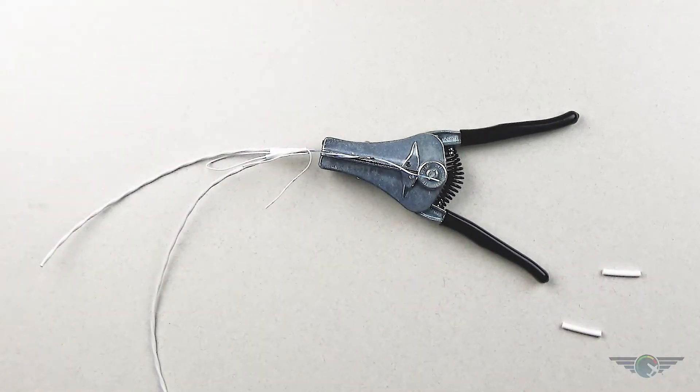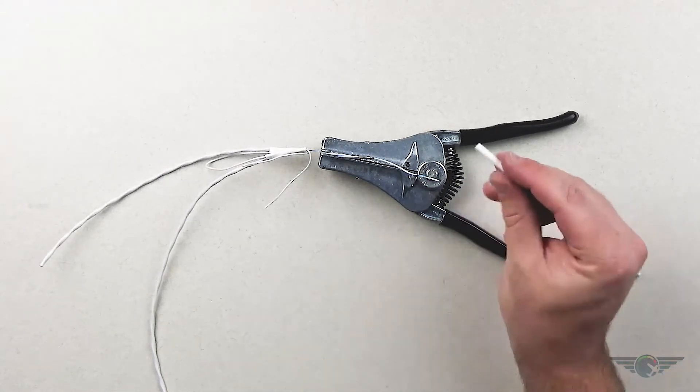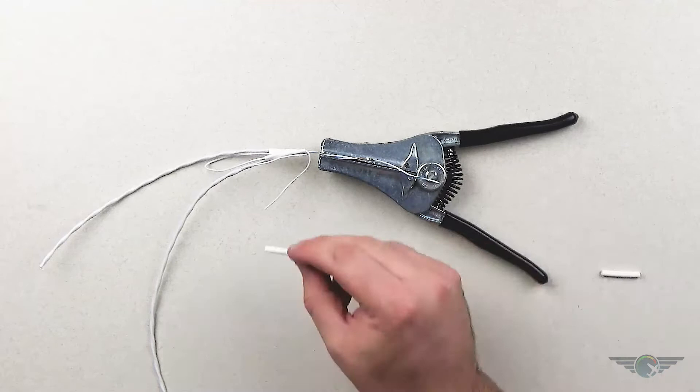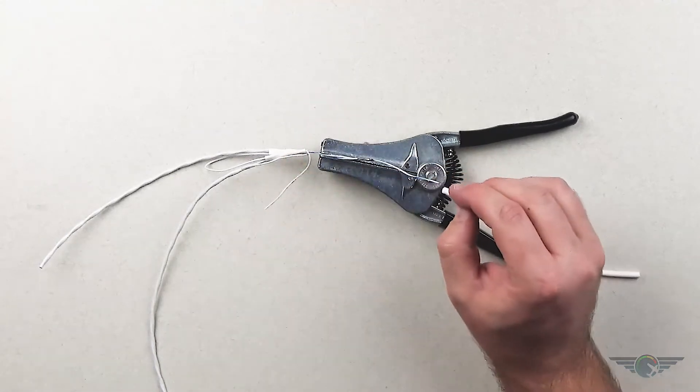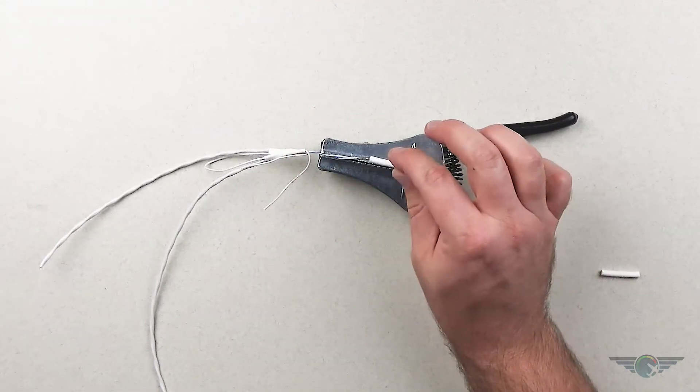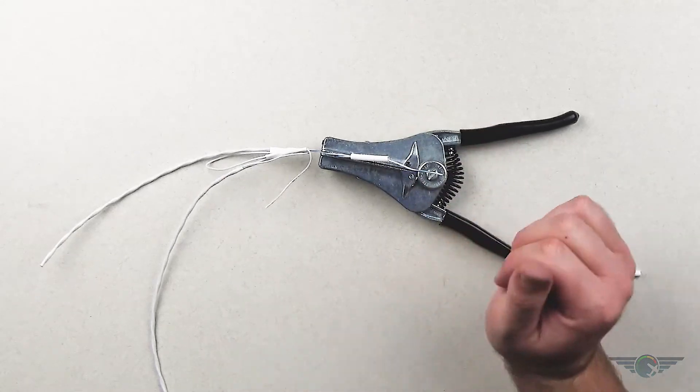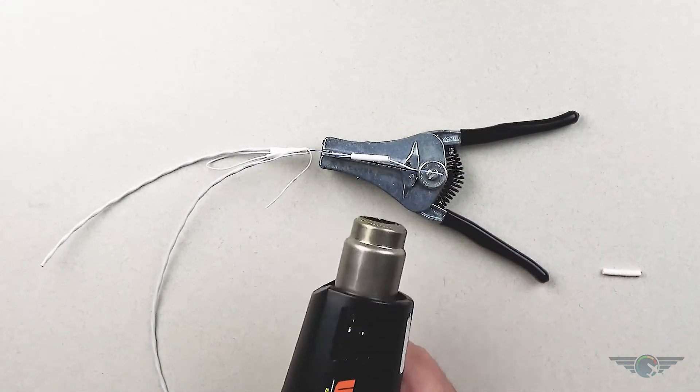Okay. So now we have a good soldered together splice. And then I'm going to take my piece of heat shrink. It's a little smaller than the heat shrink that we were using down there because it's a smaller wire. So I'll put that heat shrink tubing over that. And then again, with my heat gun,